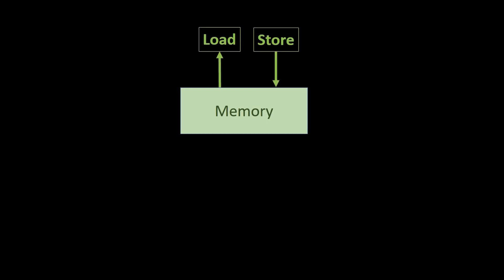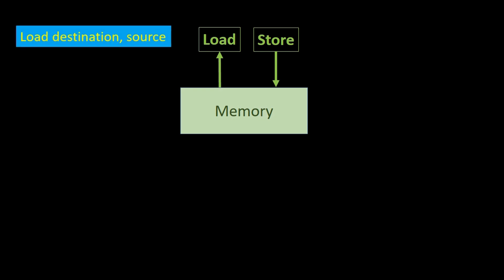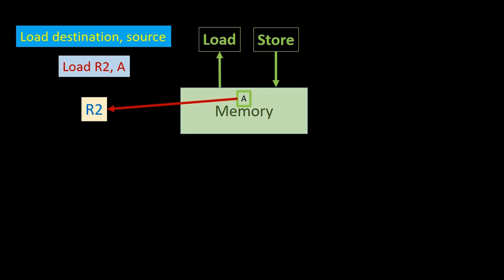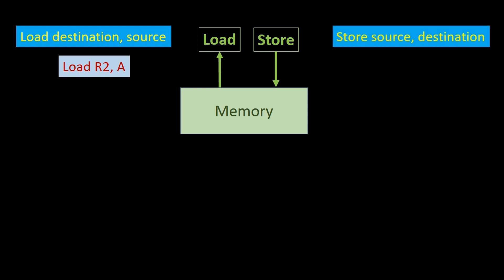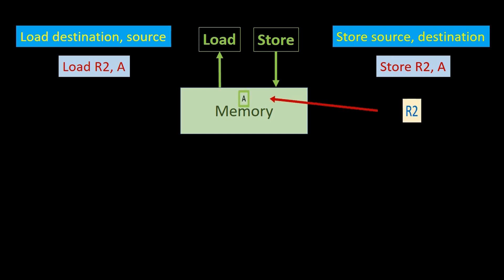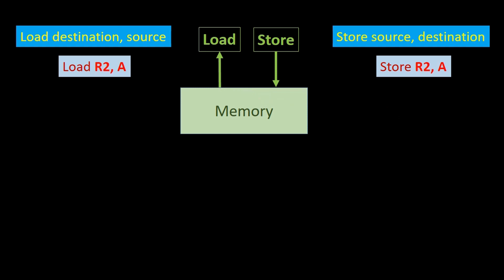The load instruction loads an operand from memory into a processor register. It has the following format: LOAD destination, source. For instance, consider the instruction LOAD R2, A. This instruction will load the operand from memory location A into register R2. On the other hand, the store instruction is used to store data back to memory. It is of the form: STORE source, destination. For example, STORE R2, A — the content of register R2 will be stored into memory location A. You may have noticed that the operand side of both instructions looks the same with R2 and A appearing in both cases. However, there's a crucial difference in the order of the source and destination. The store instruction reverses the order seen in the load instruction.